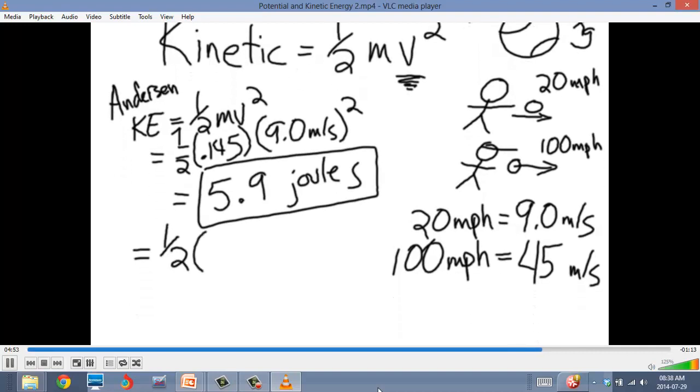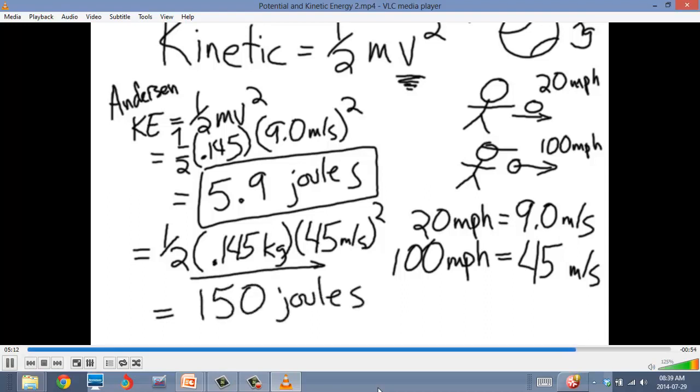Now let's try the faster pitch. It's 100 miles an hour, so that is 45 meters per second. So we're going to use 1 half mv squared. Our mass remains the same, or it's 0.145 kilograms, except our velocity now is 45 meters per second. If I multiply that across, using significant digits, I get 150 joules of energy.